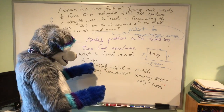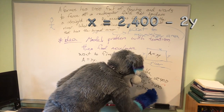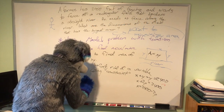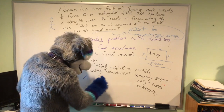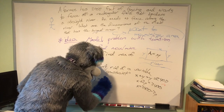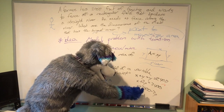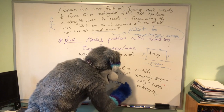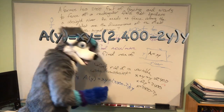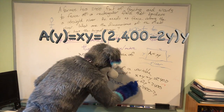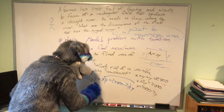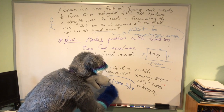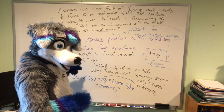And we can solve for x and then plug it in. x equals 2,400 minus 2y. In that case then, our area function will be just in terms of y now. It's x times y, and x is 2,400 minus 2y. So the area equals 2,400 minus 2y, times y. And that equals 2,400y minus 2y squared. So we want to maximize this.